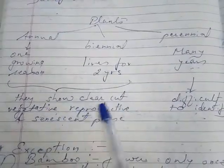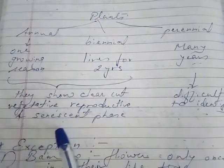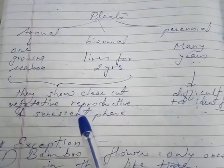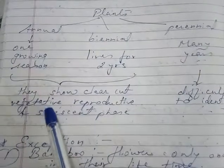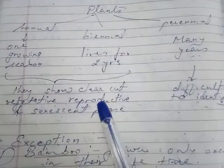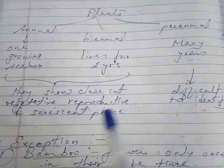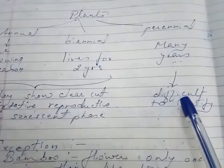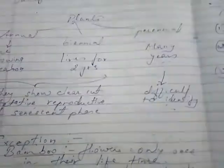Biennial plants live for two years and perennial plants live for many years. In annual and biennial plants, there are clear-cut vegetative, reproductive, and senescent phases that can be clearly seen. While in the case of perennial plants, it is difficult to identify these three phases.